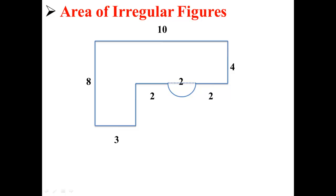Here we have a very irregular figure. It seems to be made up of several rectangles and of a half circle. How would we find its area?